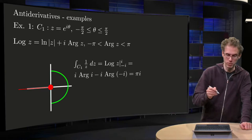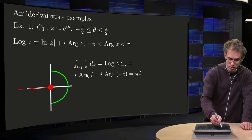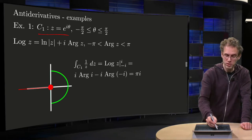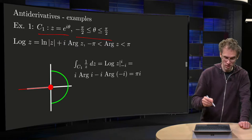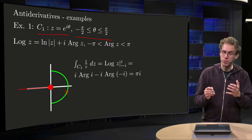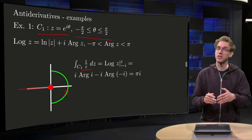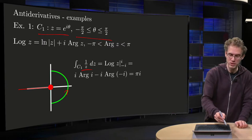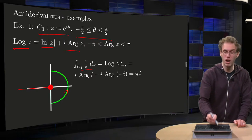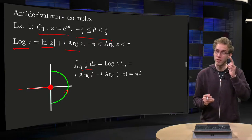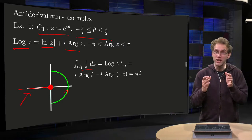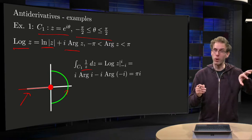First example: our curve C1 will be the unit circle with only the right half, so theta between minus pi over 2 and pi over 2. We want to integrate the function 1 over z, so we want to have a log of z. The log of z will be the natural log of the modulus of z plus i times the argument of z, where we use the capital A branch, because we can put the branch cut on the negative real axis, nicely away from our contour.